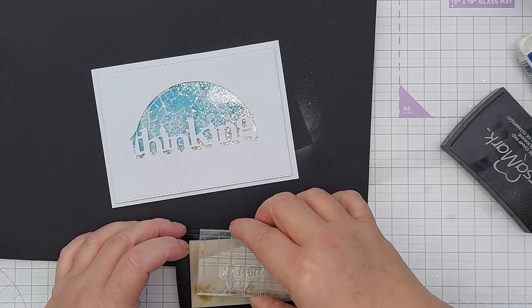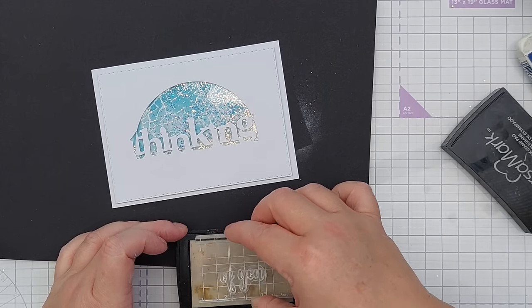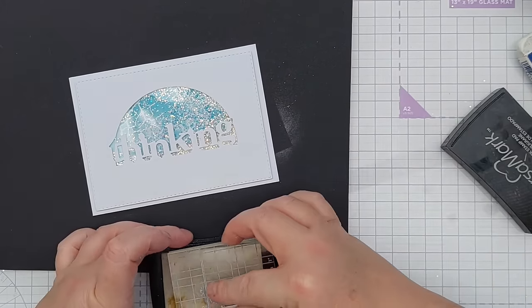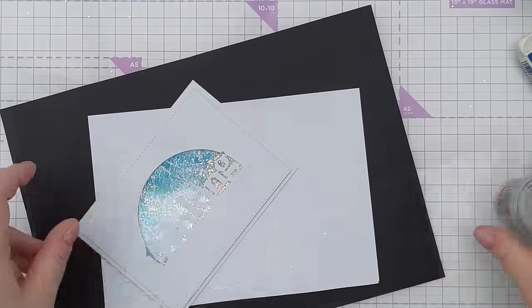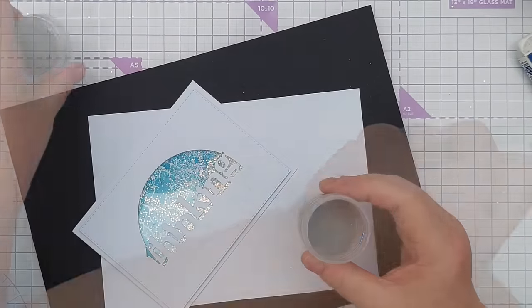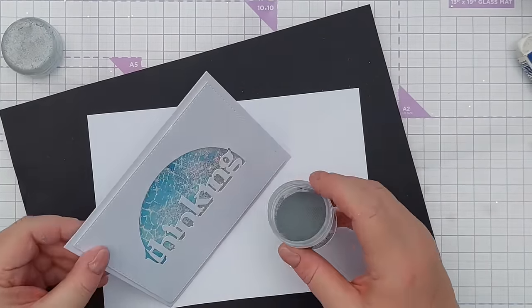And this is where it all goes horribly wrong because I've decided to heat emboss it, so this is definitely something that you should do before you construct your shaker card. But hey ho, so I've stamped that in embossing ink and it looks fine and I think silver, that works with the cool colours and the iridescent glitter.